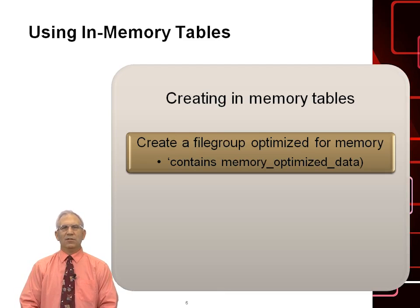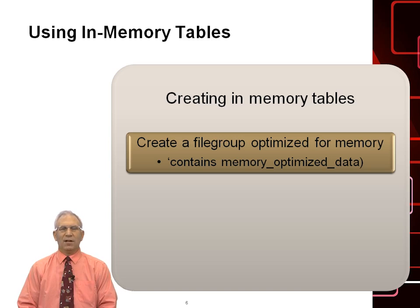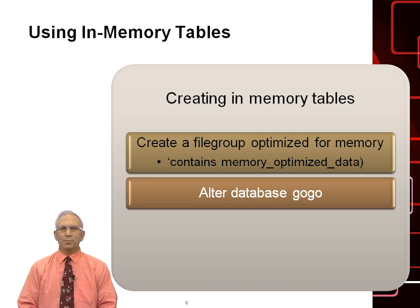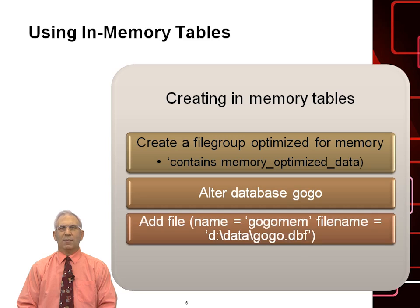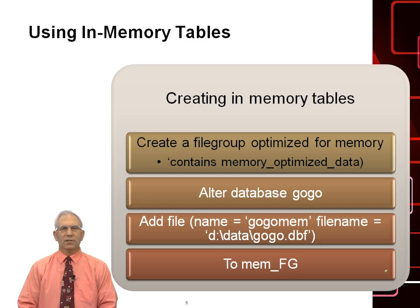What do we need to do to create an in-memory table? There are two main steps. First, you have to create a file group and then populate that file group with files. That file group must be defined as memory optimized data — it has to have the keywords CONTAINS MEMORY_OPTIMIZED DATA. Here I'm altering the database GoGo, creating a file group that contains memory optimized data, and adding the file GoGo memory to the file group memfg. You have to set up file groups and files before you can create memory optimized tables.